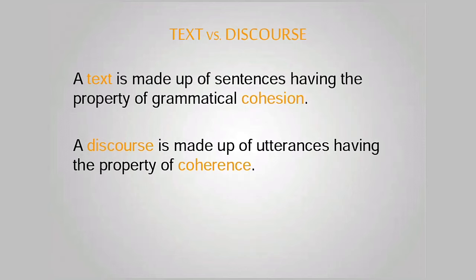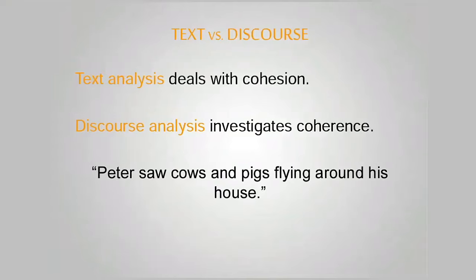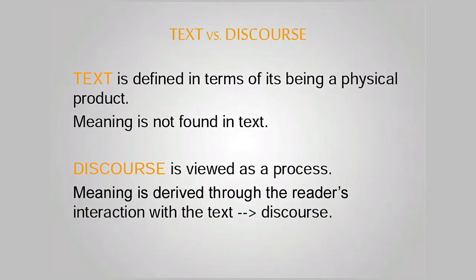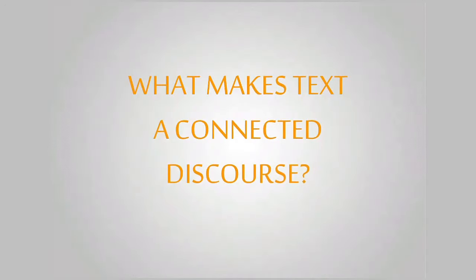A text is made up of sentences having the property of grammatical cohesion. A discourse is made up of utterances having the property of coherence. Text analysis deals with cohesion, while discourse analysis investigates coherence. Text is defined in terms of its being a physical product — meaning is not found in the text. Discourse is viewed as a process — meaning is derived through the reader's interaction with the text.